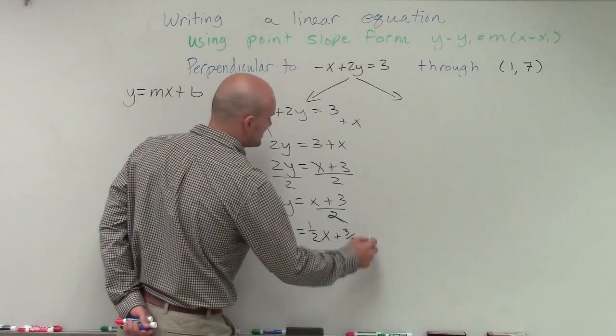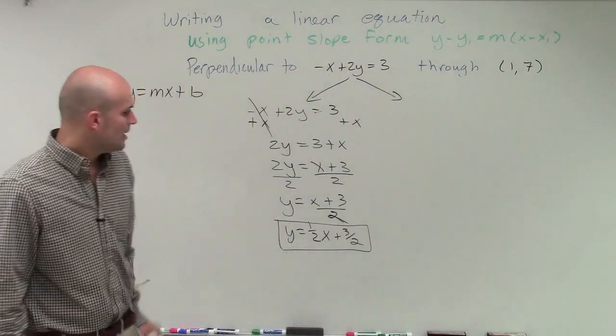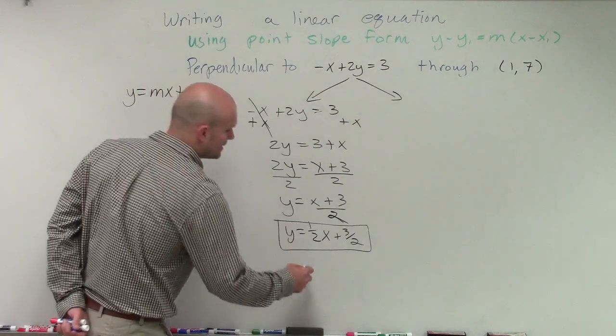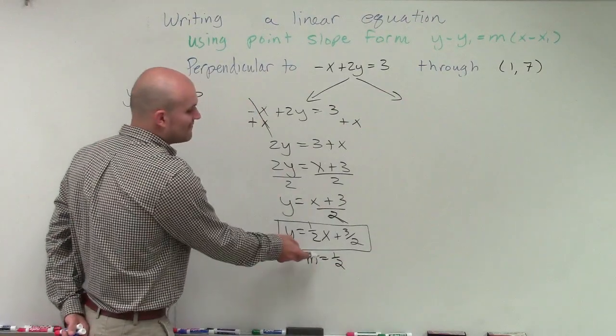We now know that this equation, we want to find an equation that's going to be opposite of this, or perpendicular to this, where my slope equals 1/2. But we want to find a perpendicular line.